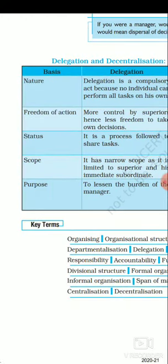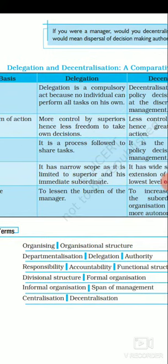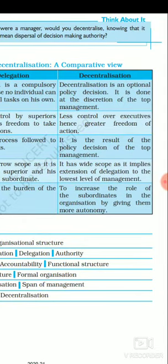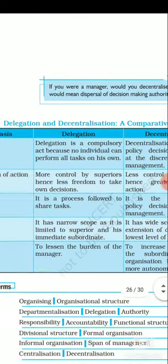The second difference is on the basis of freedom of action. In delegation, there is more control by the superior, hence less freedom for the subordinate to take their own decisions — the superior still checks their work. In decentralization, there is less control over the executive; the top management gives them more freedom for their actions.